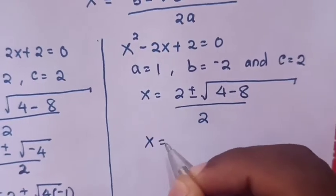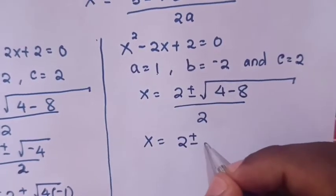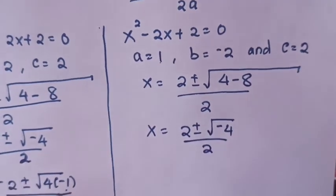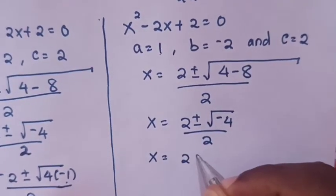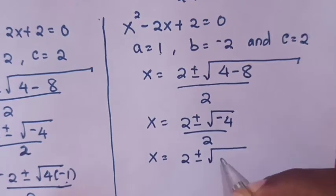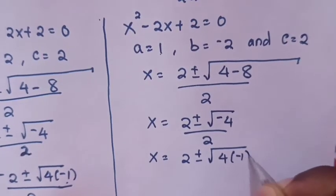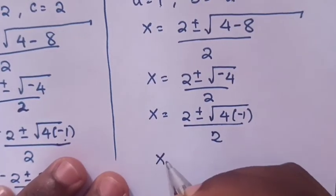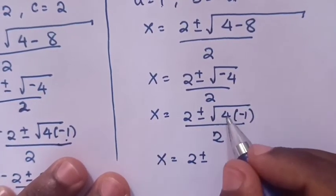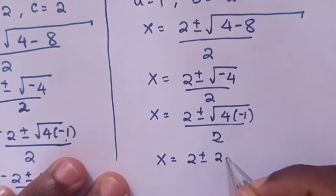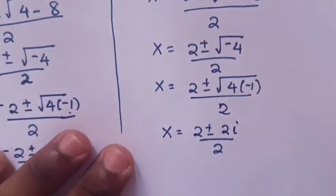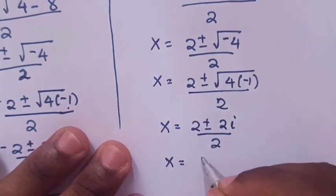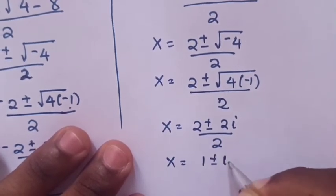So x equals 2 plus or minus the square root of negative 4, then x equals 2 plus or minus the square root of 4 times negative 1, divided by 2. So it will be 1 plus or minus i. So this is the value of x.